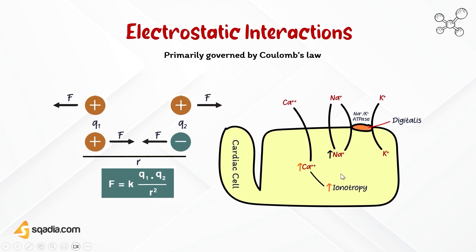Within the receptor molecule, specific amino acid residues may have charged side chains, such as positively charged lysine or negatively charged glutamic acid. When a drug molecule approaches the binding site, electrostatic interactions can occur between these charged regions. Positively charged regions of the drug interact with negatively charged residues on the receptor and vice versa. This is governed by Coulomb's law: the force of attraction or repulsion between two charged particles is directly proportional to the magnitude of their charges and inversely proportional to the square of the distance between them.